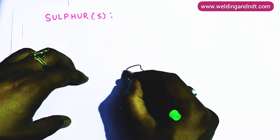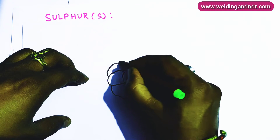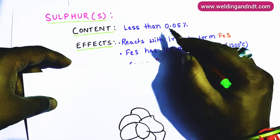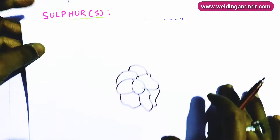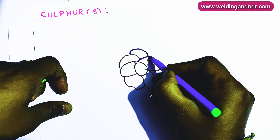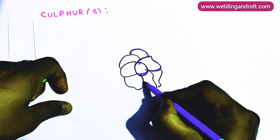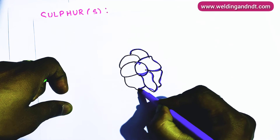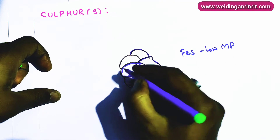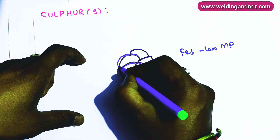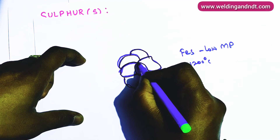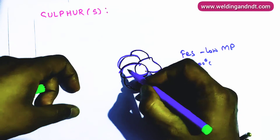Consider the grain boundaries of steel. FeS is formed when sulfur reacts with iron, and this FeS gets accumulated at the grain boundaries. Since FeS has a low melting point compared to steel, when you heat the steel to around 1200 degrees Celsius, the FeS at the boundaries will start melting and the component will crack at those boundaries.